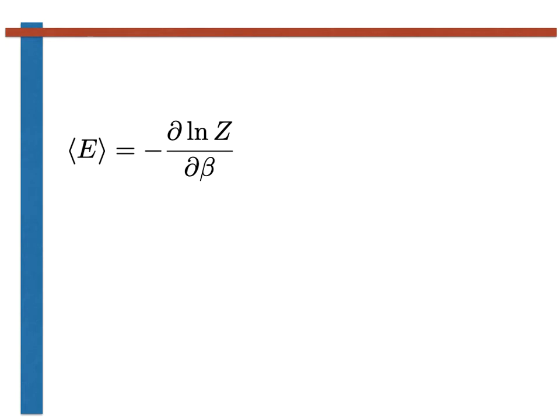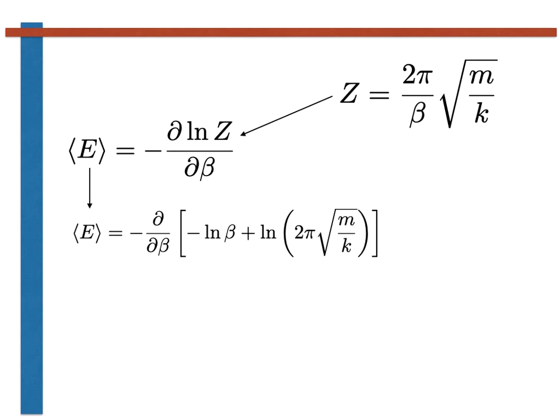Having derived an expression for the partition function, let's find out what we can about the behaviour of this system. We can derive an expression for the average energy of the system using the familiar derivative that is shown on the screen here. When we insert the expression that we've just derived for the partition function into this equation, we find that we have to compute the following straightforward derivative. This derivative is just 1 over beta. Remembering that beta is 1 over kBT, we thus find that the average energy of the harmonic oscillator is kBT.